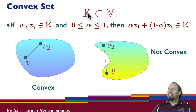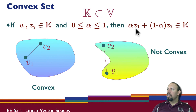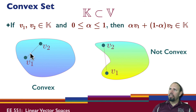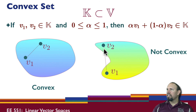A convex set K contained in a vector space is one where if v1 and v2 are in the convex set and alpha is some number between zero and one, then the weighted sum alpha*v1 + (1-alpha)*v2 is also in the convex set. Another way of picturing this: a convex set is such that if you take any two points in the set and draw a line between them, every point on that line is also in the set. Here is an example of a set that is convex, and here is a set that is not convex — a portion of the line between two points is not in the set.